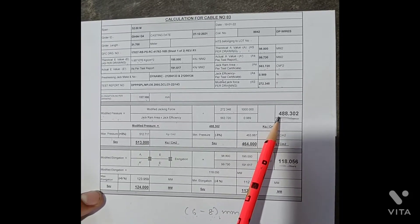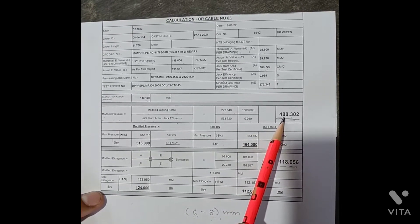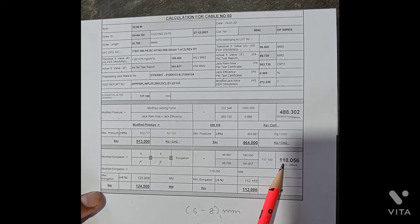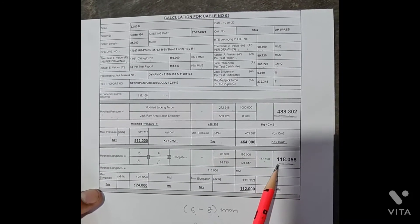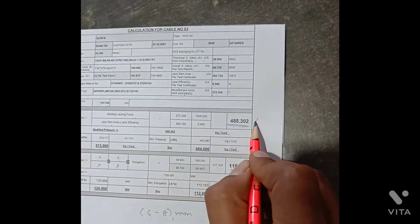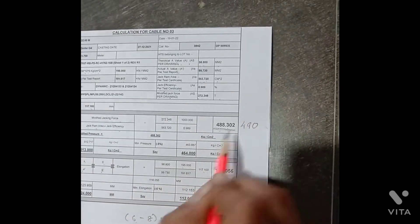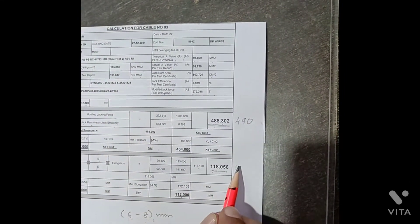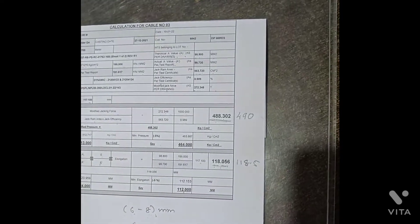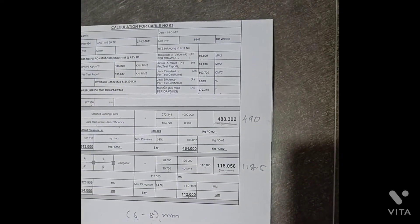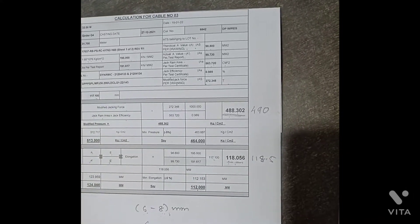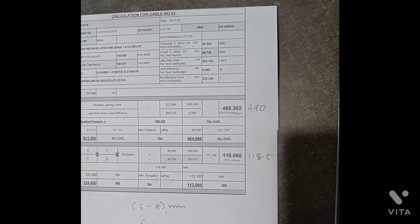The ideal case is that when the modified pressure is achieved, our elongation should also fall within the expected range. For example, if you reach 488 to 490 kg/cm², then elongation of 118 to 119 mm should be obtained. That is our ideal condition to achieve every time.